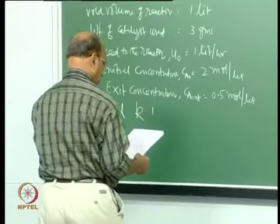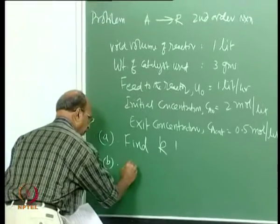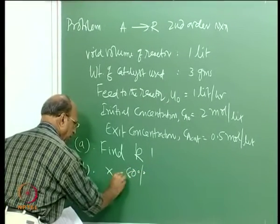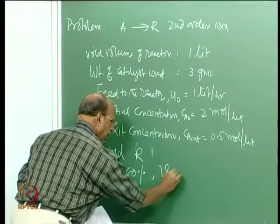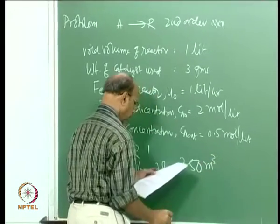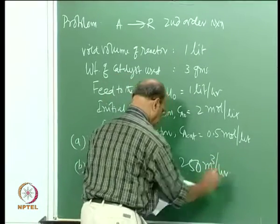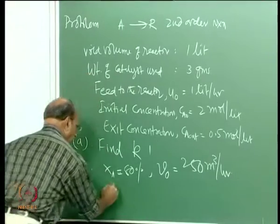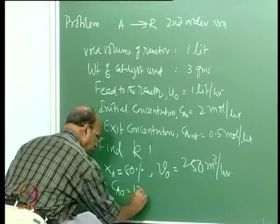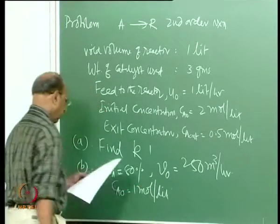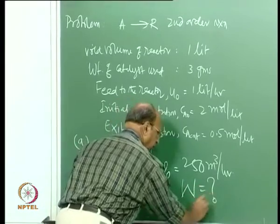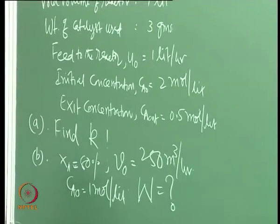The other data: X_A = 80%, V₀ = 250 m³ per hour, C_A0 = 1 mole per liter. You have to find W, the weight of catalyst.